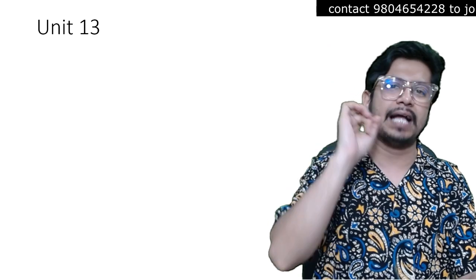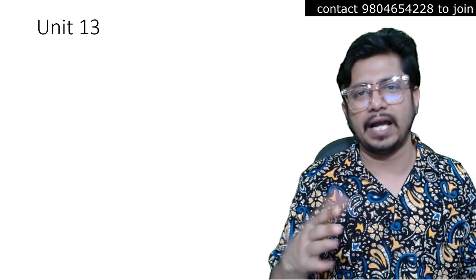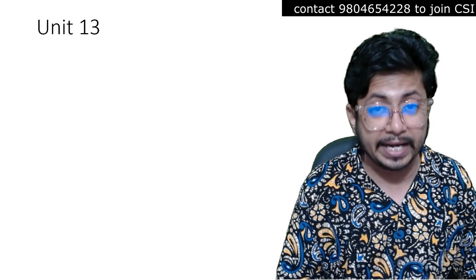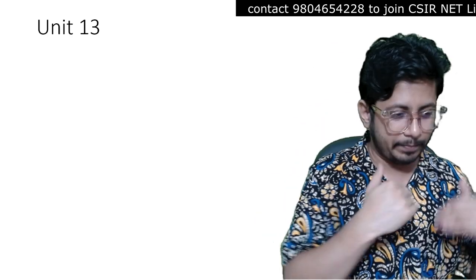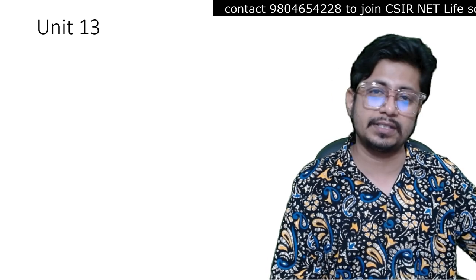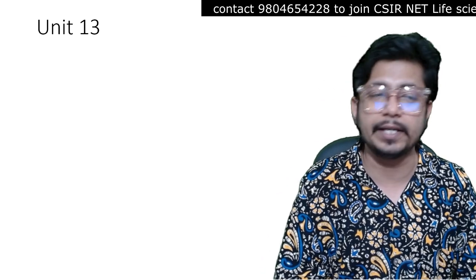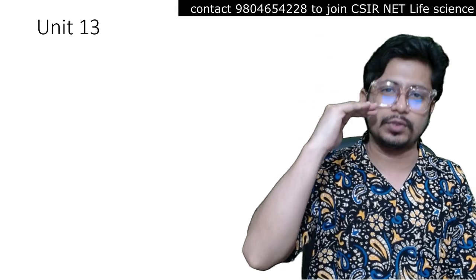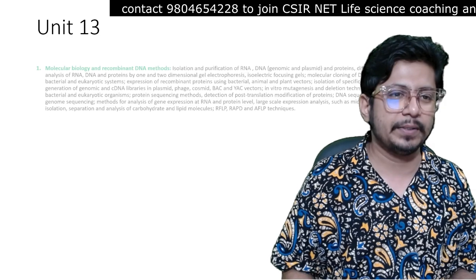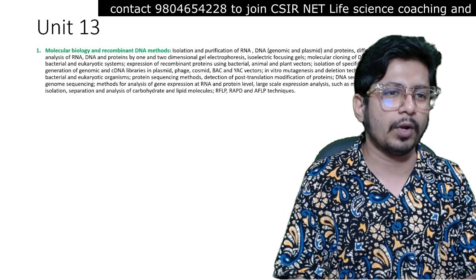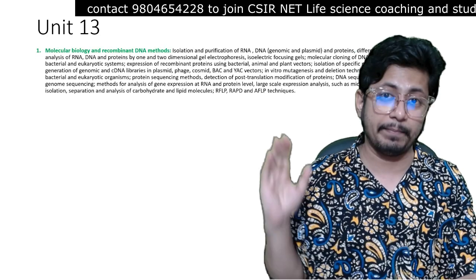The syllabus I cut and pasted from the CSIR NET website is color-graded according to my personal experience as well as a 10-year question paper study. Green means the most important topics, yellow means moderately important topics, and red means least important topics. Let's start with molecular biology and recombinant DNA methods.